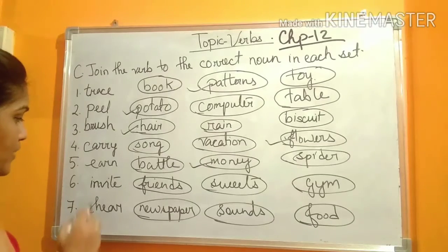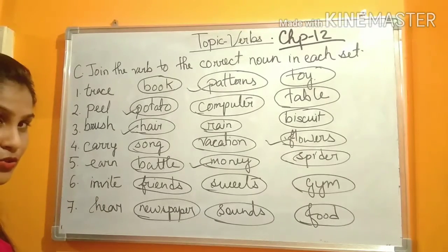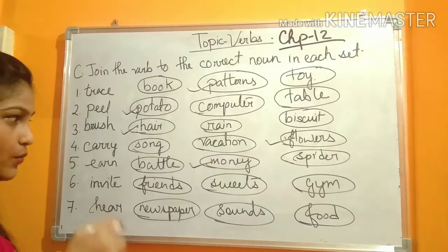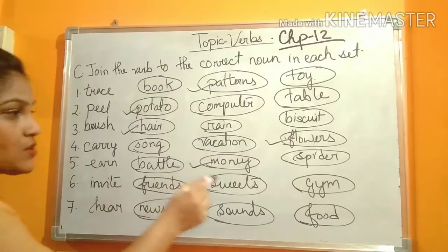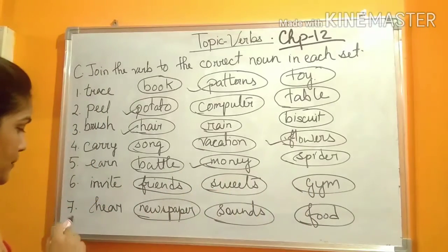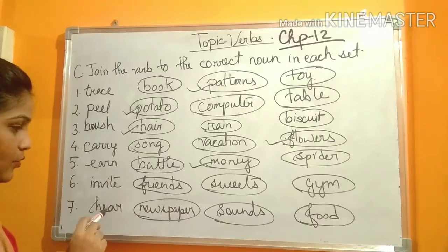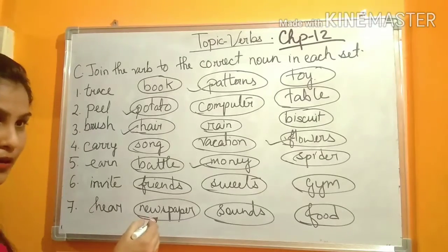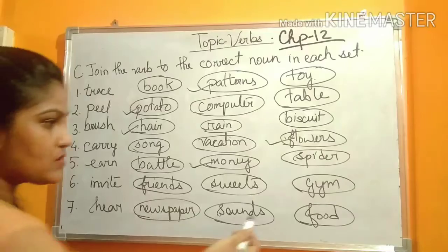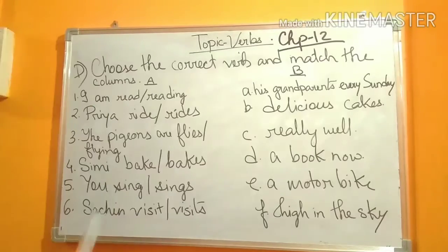Numbers six and seven, you will do by yourself. Number six: Invite — when you request someone to go somewhere or to come to your house. Invite what? Friends, sweets, or gym? Number seven: Hear. Hear what? Newspaper, sounds, or food? You will do these by your own.